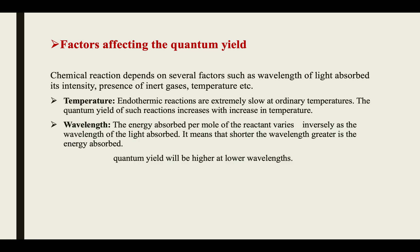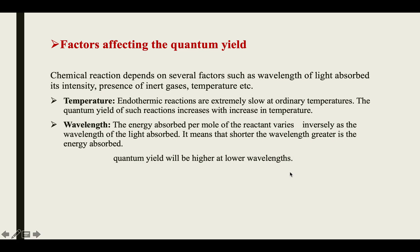Now we will see the effect of wavelength on photochemical reactions. The energy absorbed per mole of reactant varies inversely with the wavelength of light absorbed — meaning the shorter the wavelength, the greater the energy absorbed. Since energy is inversely proportional to wavelength, shorter wavelength means higher energy, and therefore higher quantum yield at lower wavelength.